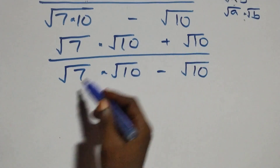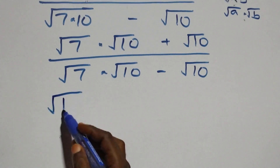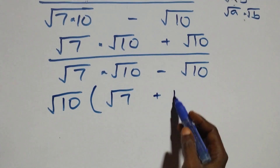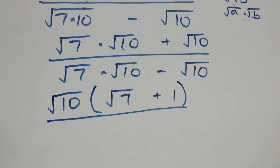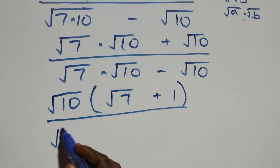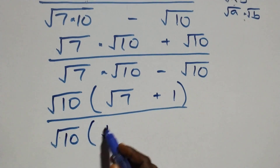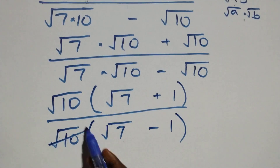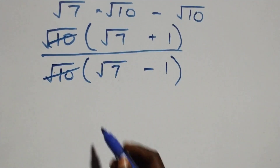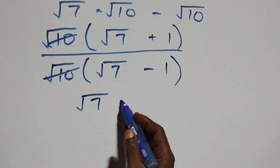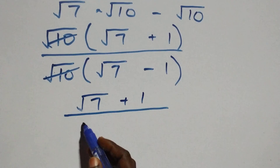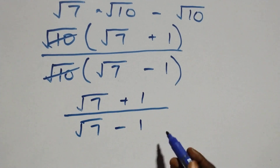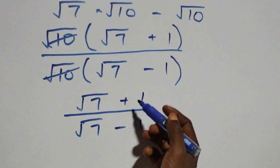In the next step, √10 is a common factor in the numerator, so we factor it out: √10 times (√7 + 1), divided by √10 times (√7 − 1). This means √10 cancels, and all we have is (√7 + 1) divided by (√7 − 1). The next step is to rationalize this expression by multiplying numerator and denominator by the conjugate of the denominator.